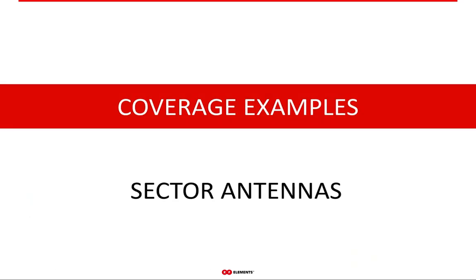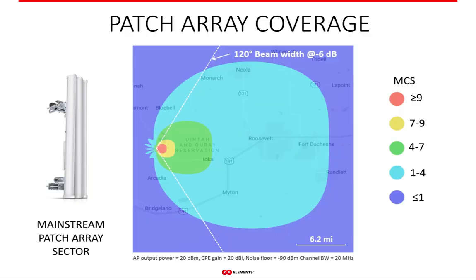We've prepared examples of commonly used antennas in the WISP industry to illustrate how coverage looks based on real, physics-based data and simulation. Starting with sector antennas: the traditional sector antenna has a wide radiation pattern, and unsurprisingly the coverage is not determined by beam width. You can also clearly see the back radiation and side lobes that cause all the collocation issues with these antennas.